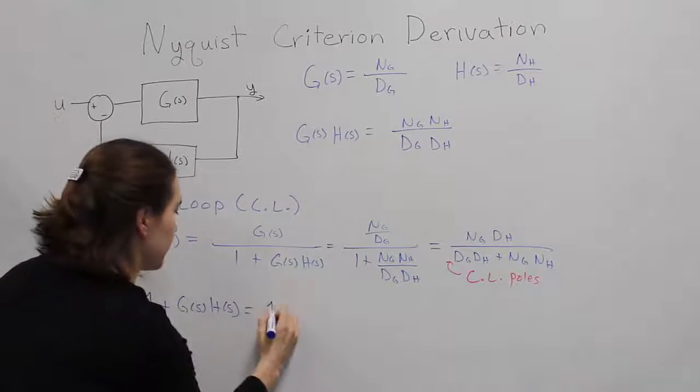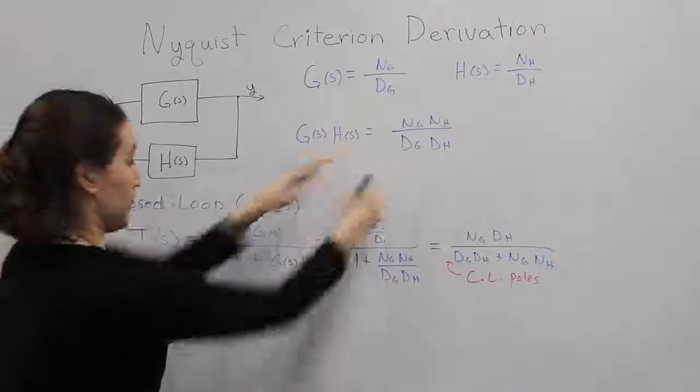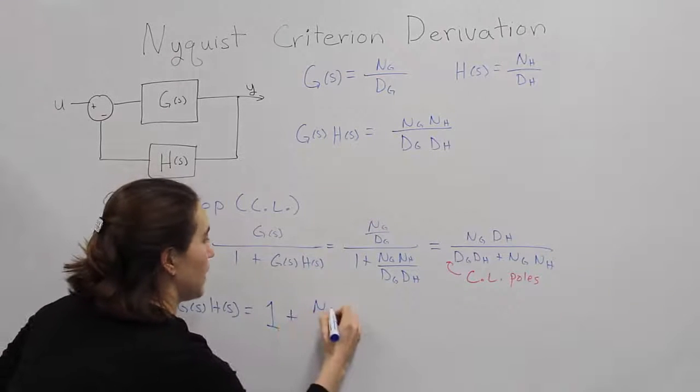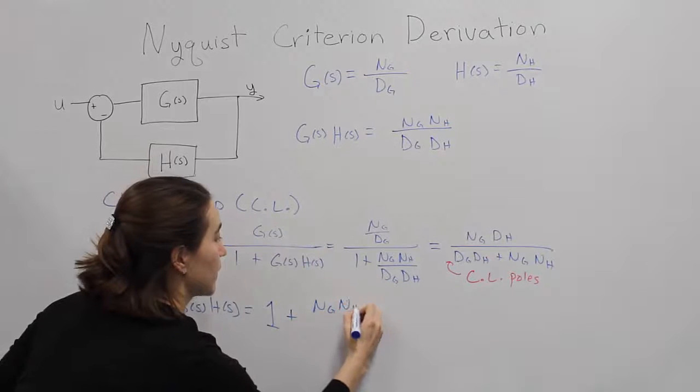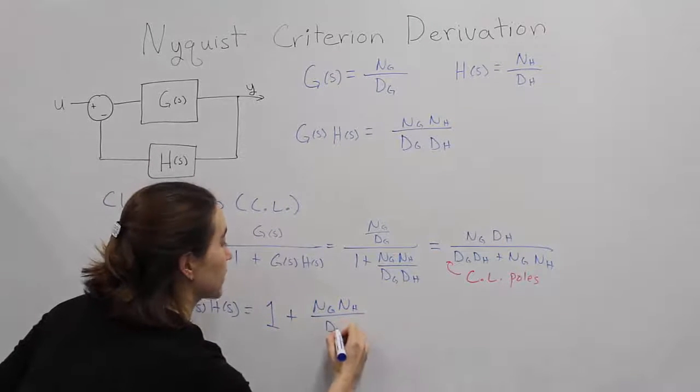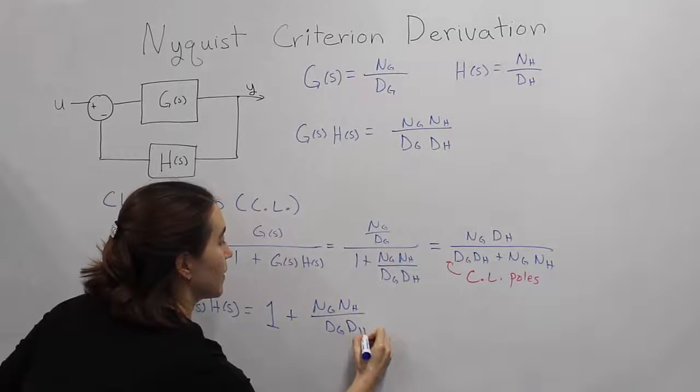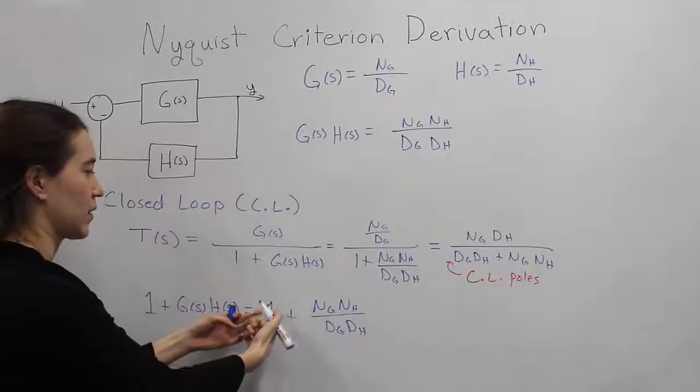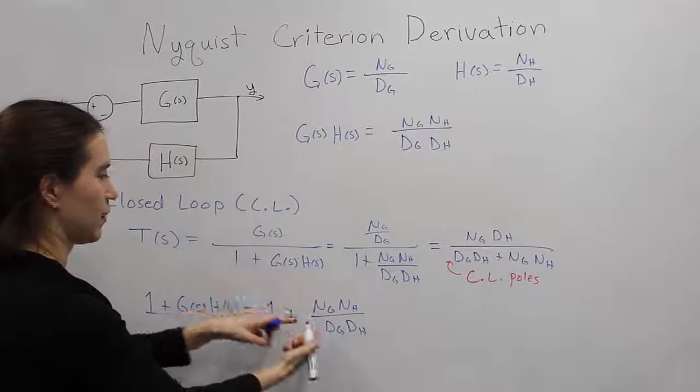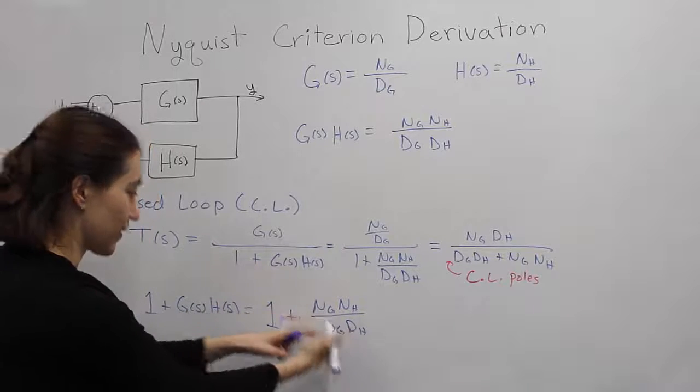So we would get 1 plus this value, this term here, and G, the numerators, over the denominators, dH. Let's combine these together, so we're going to multiply. One is going to be this denominator over the same denominator.